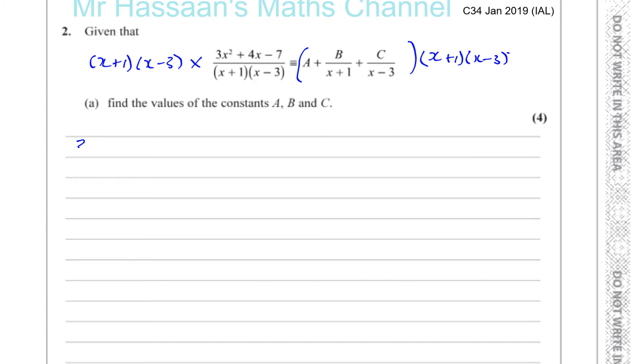On the left-hand side, you're left with 3x² + 4x - 7. Then the A will multiply with both of these, so you have A times (x+1) times (x-3). Plus B times, well the (x+1) will cancel with (x+1), leaving you with (x-3). And when you multiply this by the C, the (x-3) will cancel out and you're left with C times (x+1).